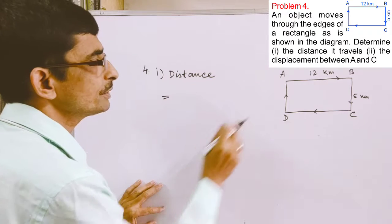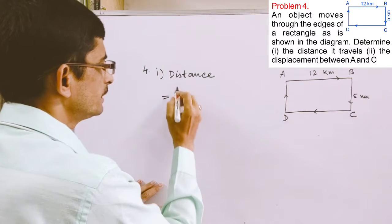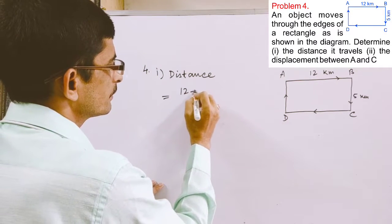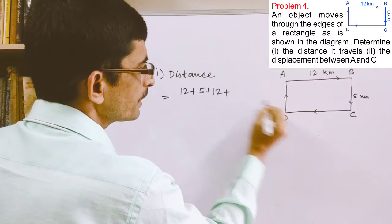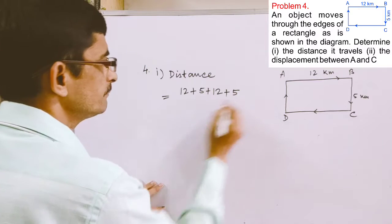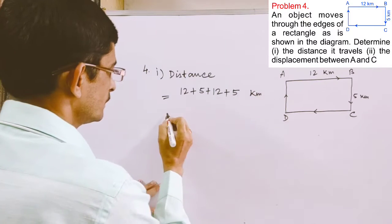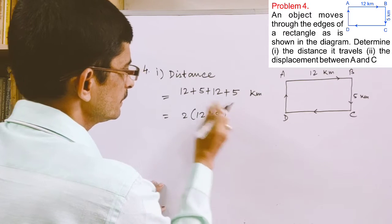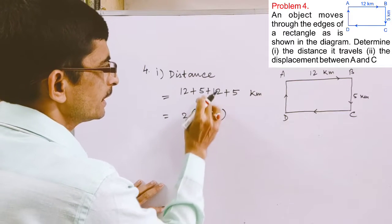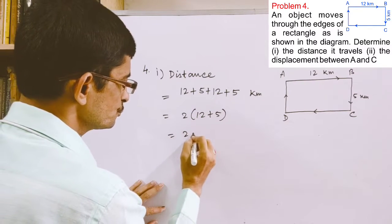Now the distance is equal to total path traveled, that is 12 plus 5 plus another 12 plus another 5 kilometers, which is 2 into 12 plus 5. See, 12 is added twice and 5 is added twice, that is 2 into 17, which is 34 kilometers.